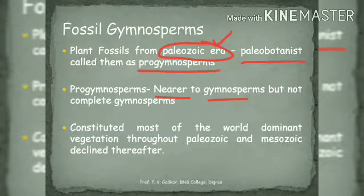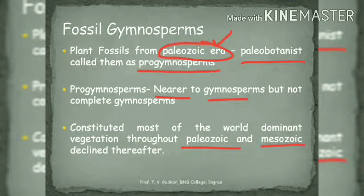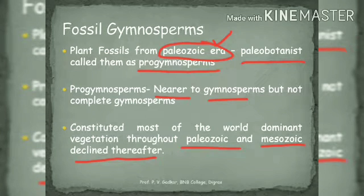Pro gymnosperms constitute most of the world's dominant vegetation throughout the paleozoic and mesozoic eras, and then decline thereafter due to some extinction events.